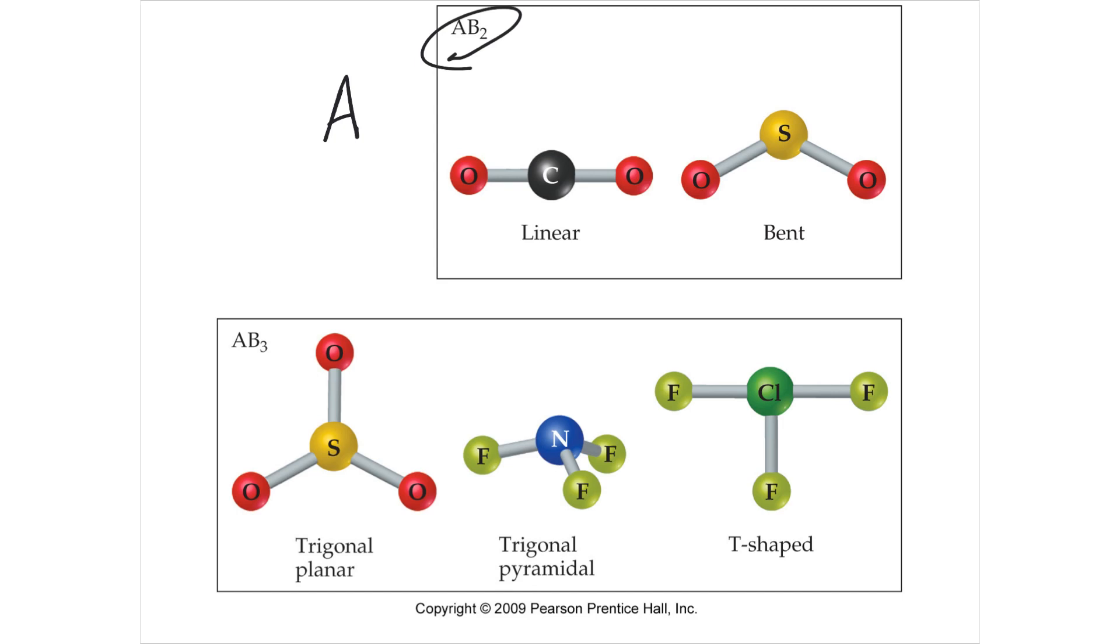So if you have 180 degrees, that's called linear. If it's not 180 degrees, then in this case it's called bent, and you can determine that.